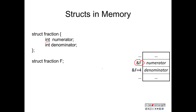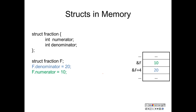When we declare this variable, we don't know where in memory it will sit. But we do know that when we access f, we can access the numerator, and accessing the address of f plus 4 gives the denominator. We don't know the values when we declare a structure — you cannot assume that C initializes variables to anything by default, so when you declare a variable it's uninitialized. You can assign a value to a structure using dot notation: f.denominator sets the denominator field of f to 20, and similarly we can initialize the numerator to 10.